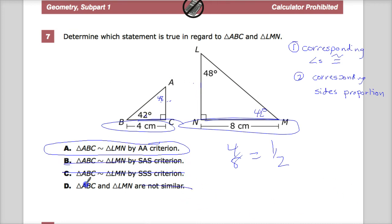And because I have AA, they are not not similar, so they certainly are. So my answer to number 7 is A.